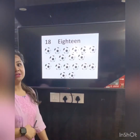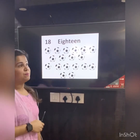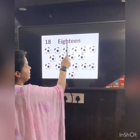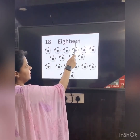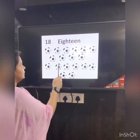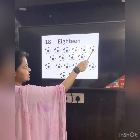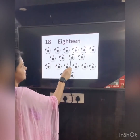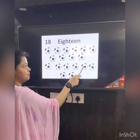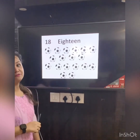What comes after 17 children? 18. So let's break it into two halves — E-I-G-H-T, eight, T-E-E-N. 18. Let's count: 1, 2, 3, 4, 5, 6, 7, 8, 9, 10, 11, 12, 13, 14, 15, 16, 17, 18. So we have 18 footballs here.